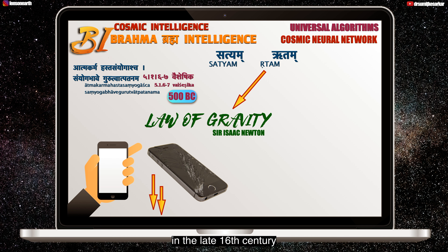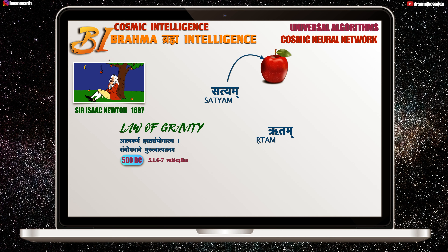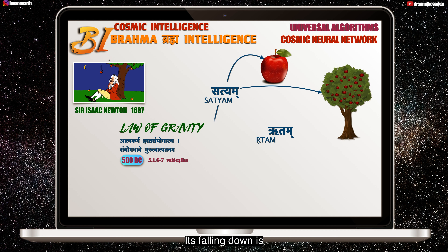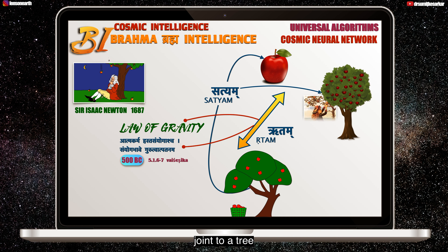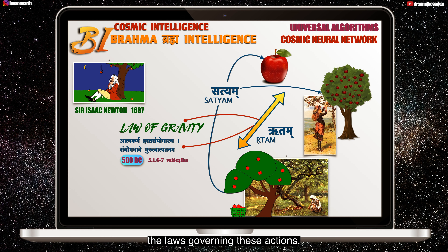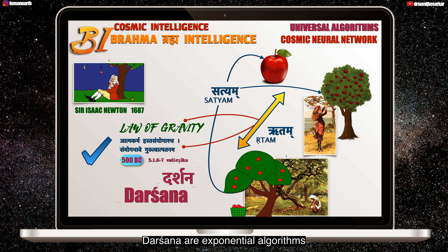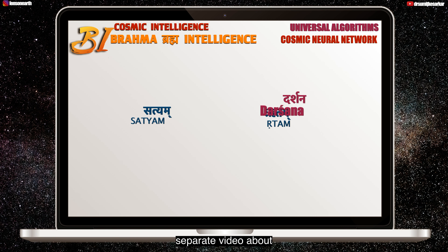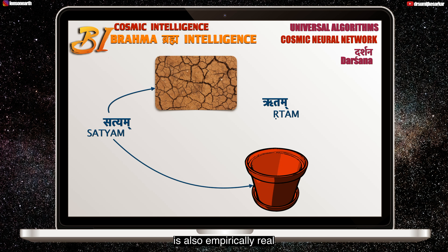Let me try to simplify it. Look at this Vaisheshika Sutra, which translates loosely as: objects stay in hand due to their conjunction with the hand; when the conjunction is lost the object falls down due to its own weight. The Vaisheshika Sutra, earliest documented around 500 BC, in brief explains the universal rhythm or law of gravity — much as later attributed to Sir Isaac Newton in the late 16th century with the famous example of an apple falling from a tree. In terms of Satyam and Ritam, the apple here is Satyam. Its remaining conjoined to the tree is Satyam. Its falling down is also Satyam because we experience it. Why it falls down is Ritam — the law of gravity. The laws governing these actions, the Ritam, was self-revealed to the Vaisheshikas.